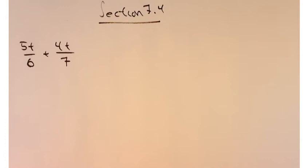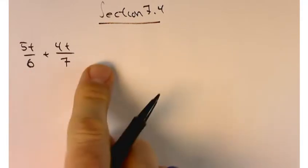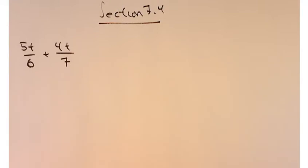Section 7.4 is where we start putting all the things together. We're going to find a common denominator, convert to a common denominator, and then do the addition or subtraction that goes along with the problem.